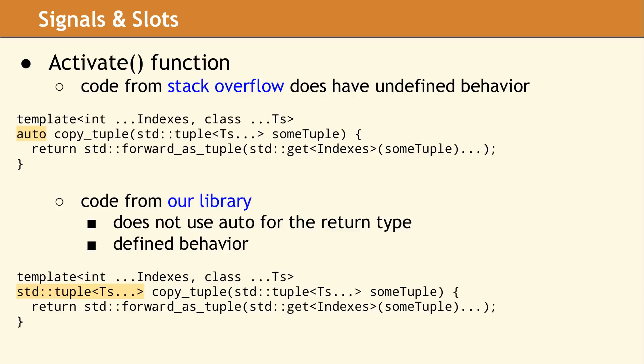One of the replies on Stack Overflow showed the code we have listed. The idea of the copy tuple function is to extract each element of the past tuple and then use an existing std function to forward the result. The person who posted this code is correct — this does actually result in undefined behavior. As an example, assume that we have a tuple containing only values like an int and a double. The forward as tuple function will create a new tuple containing an L-value reference to an int and an L-value reference to a float. When the copy tuple function returns, the references in the return tuple will refer to objects which are now out of scope.